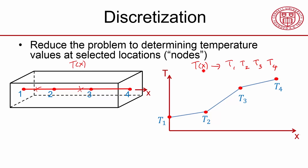And it's easier to determine a finite number of values rather than a function. Determining unknown functions is hard. Determining a finite number of values is not as hard.